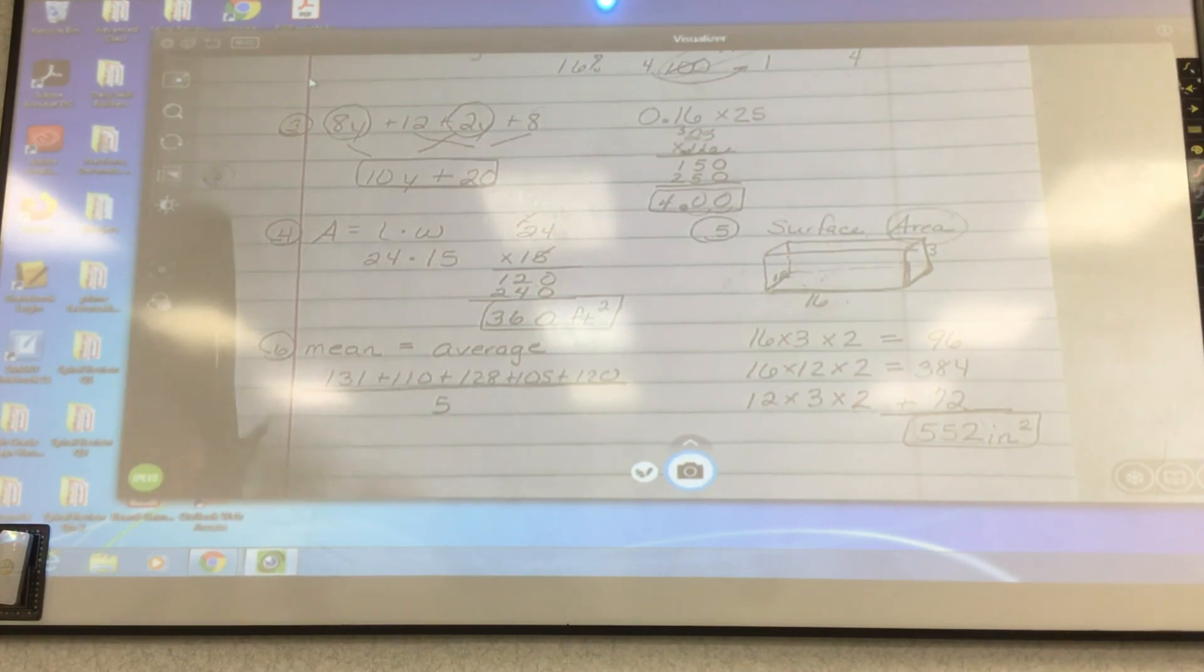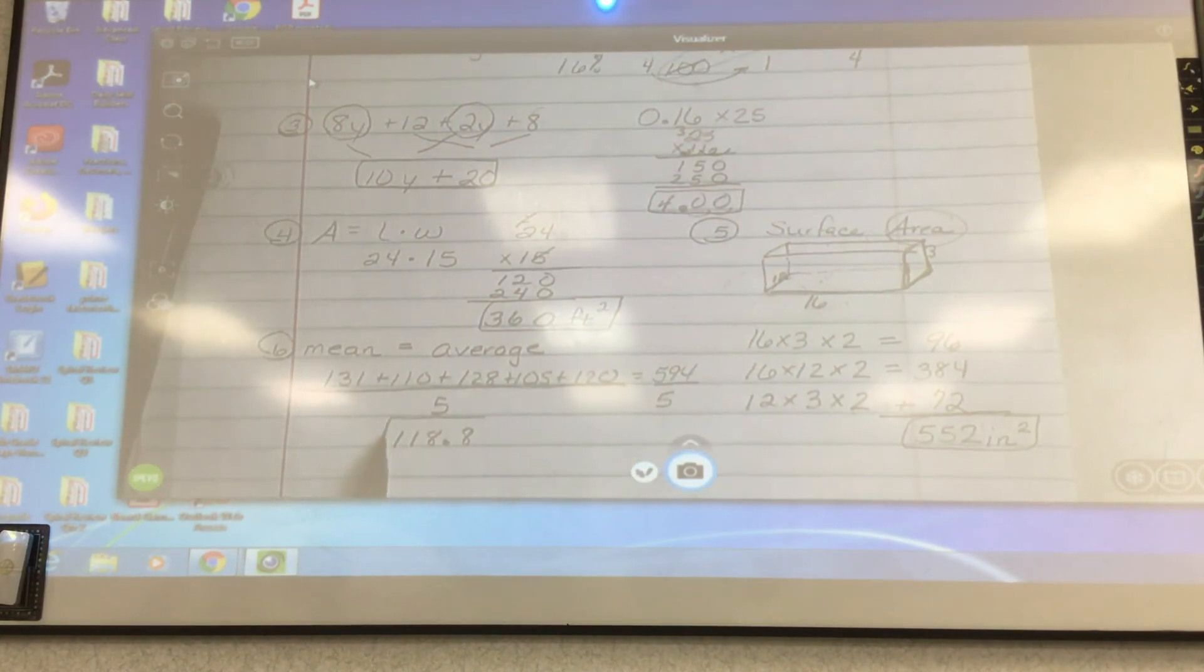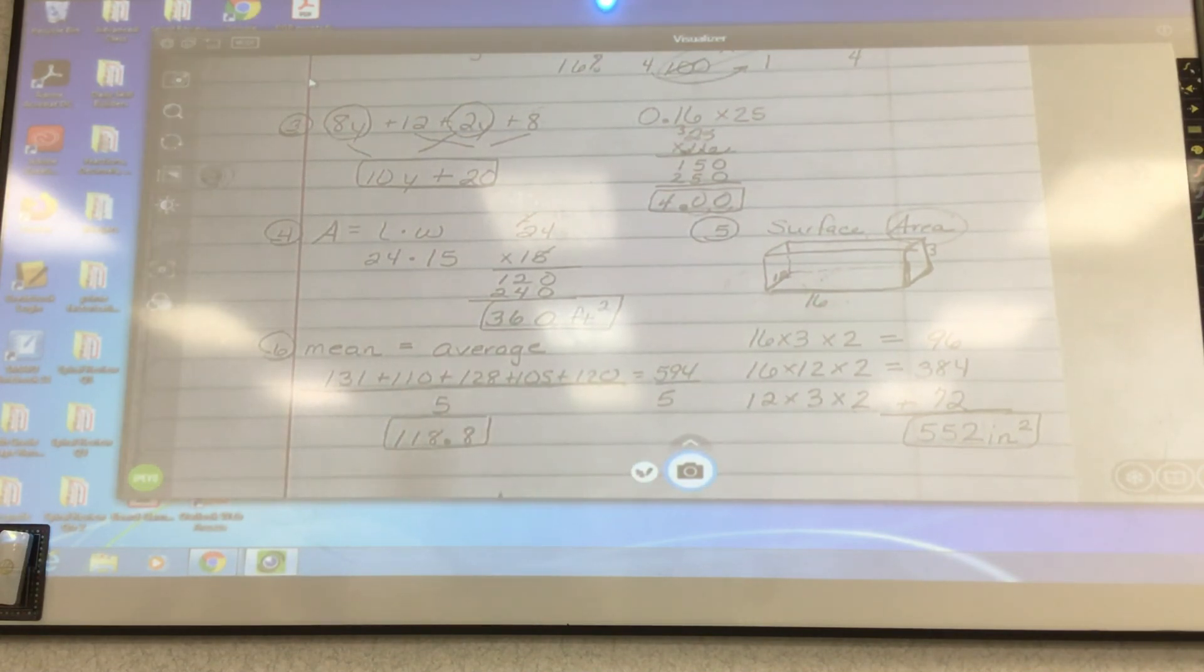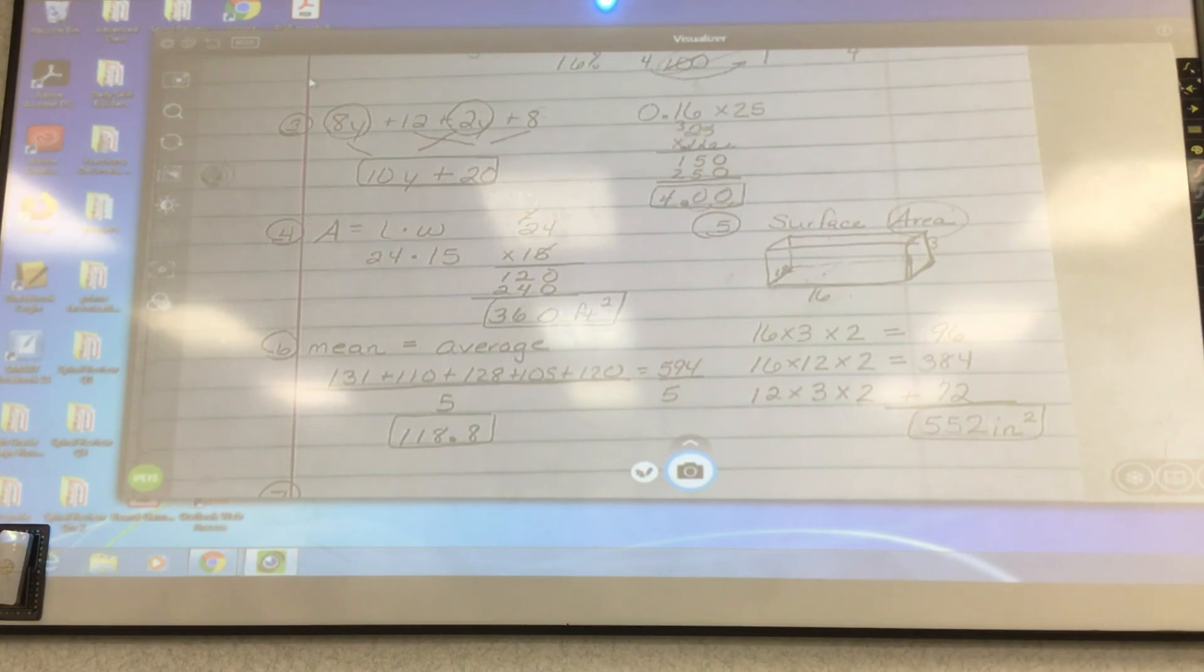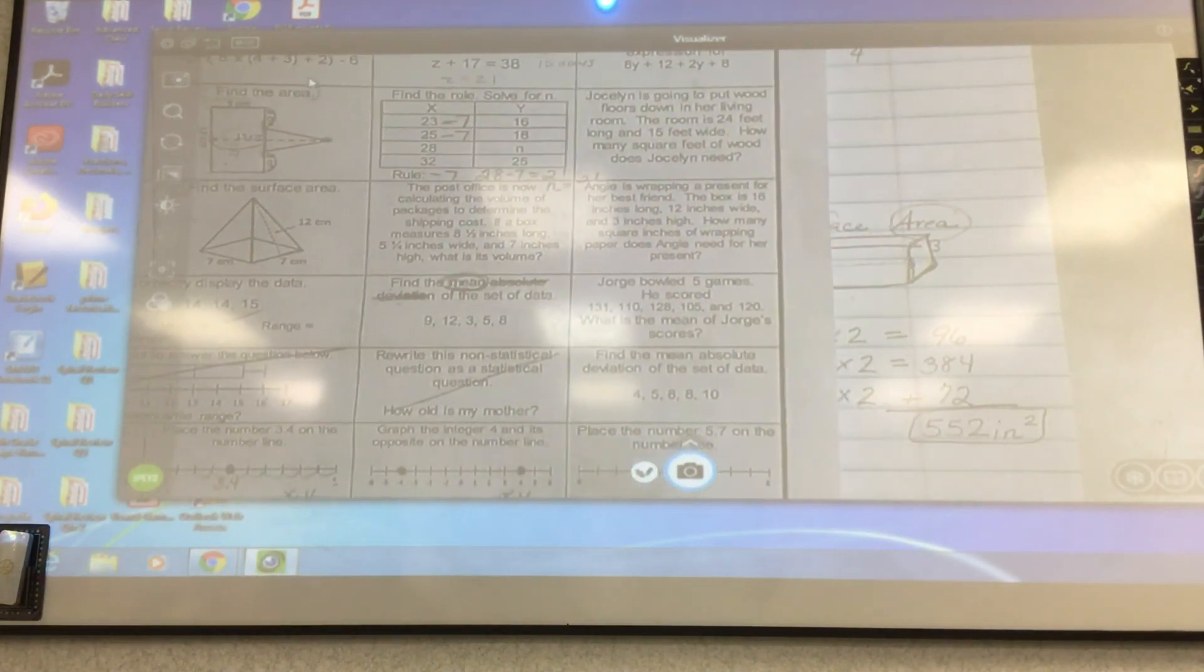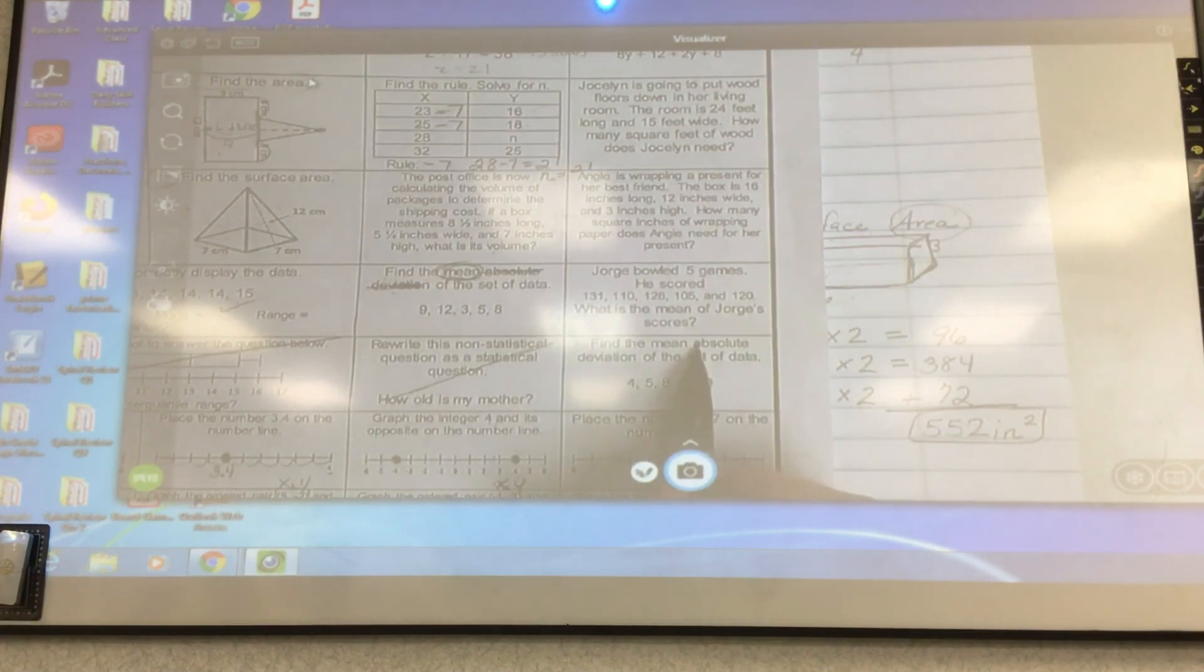Again, I got my calculator out. Isn't this going to save some time? I know you guys know how to add. 131 plus 110 plus 128 plus 105 plus 120 equals, so that's 594 and we're going to divide that by 5. 118.8 and it ended exactly at 0.8. Sometimes you may have to round. Number seven.